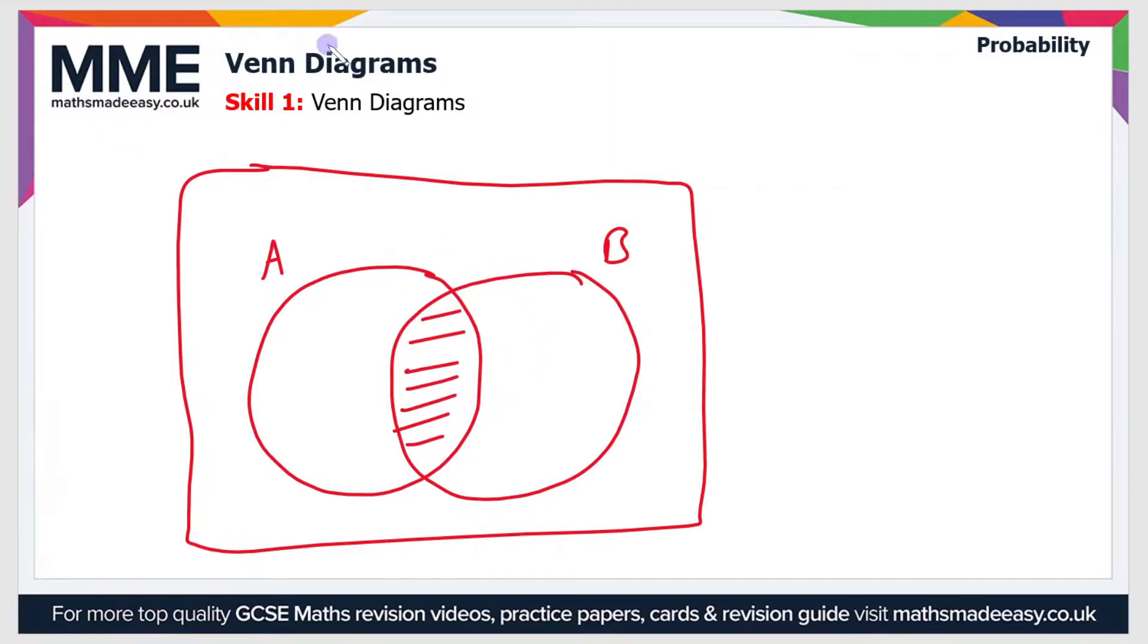And then any pieces of data that don't go into A or B should be included in the box outside the circles, and we use this symbol which is a Greek letter, and that is just the universal set. As I say, we've covered sets in a different video, so be sure to check that out if you want to know more.